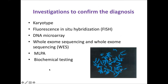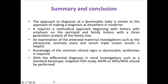When performing genetic testing, there are several methods available: karyotype, FISH (fluorescent in-situ hybridization), DNA microarray, and for single gene or monogenic diseases, whole exome sequencing is now commonly used. If no variants are found by whole exome sequencing, whole genome sequencing can be pursued. There is also MLPA, and all genetic testing can be complemented with biochemical testing.